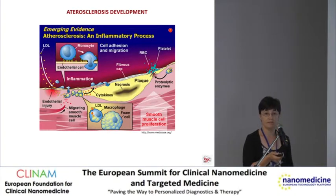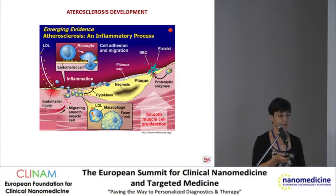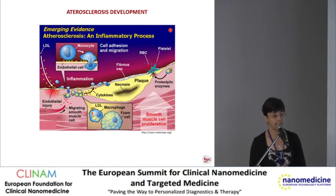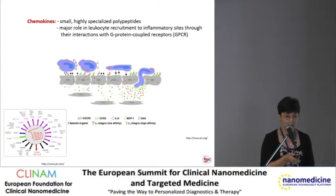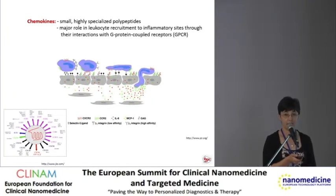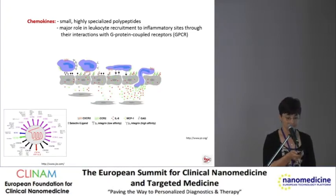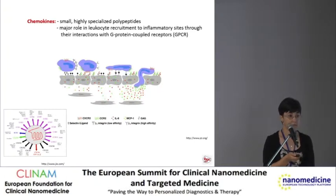As previous speakers presented, atherosclerosis is an inflammatory disease characterized by an inflammatory process and a specific repertoire of chemokines and cell adhesion molecules that attract particular immune cells into the plaque. Chemokines are small, highly specialized polypeptides that function as regulators of cellular traffic through their interaction with G-protein coupled receptors. They are expressed on glycosaminoglycans on the surface of endothelial cells and guide leukocyte entry into the arterial wall.